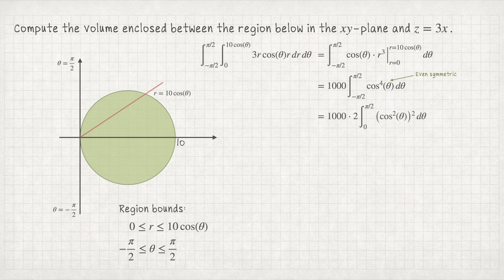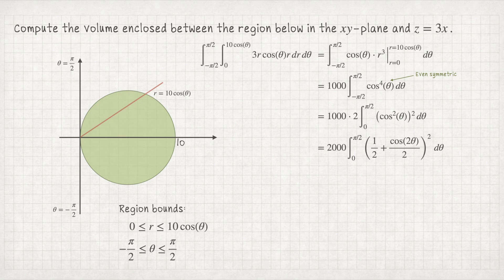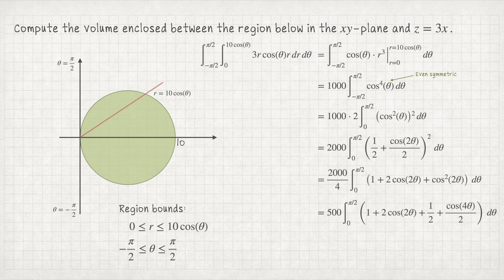Using techniques of trigonometric integration, we write cos⁴θ = (cos²θ)² and apply the power-reducing formula: cos²θ = (1 + cos2θ)/2. Pulling out the common factor of 1/2, squaring it, we get 2000/4 times the integral from 0 to π/2. Expanding (1 + cos2θ)² gives 1 + 2cos2θ + cos²2θ, and applying power reduction again: 500 times the integral from 0 to π/2 of (1 + 2cos2θ + 1/2 + cos4θ/2) dθ.